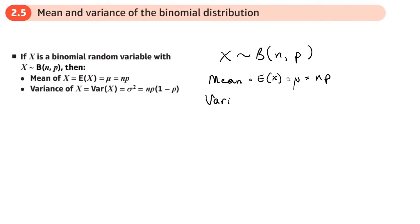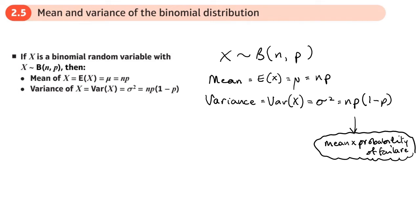Then the variance of the binomial distribution, we use Var(X) as well, like we did with the Poisson distribution, so that's sigma squared. And the way we do that, that's np, so that's basically the mean, times by 1 minus p. So that bit, you're basically doing the mean times by the probability of failure. And doing that calculation will give you the variance. Obviously, we square root it to find the standard deviation.